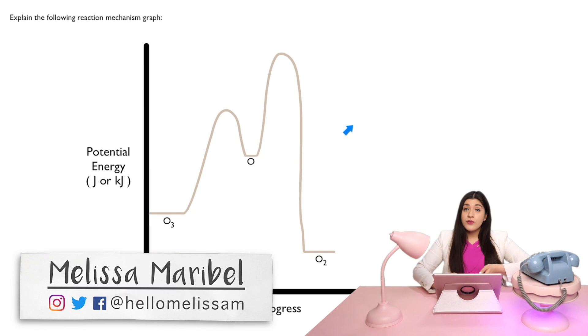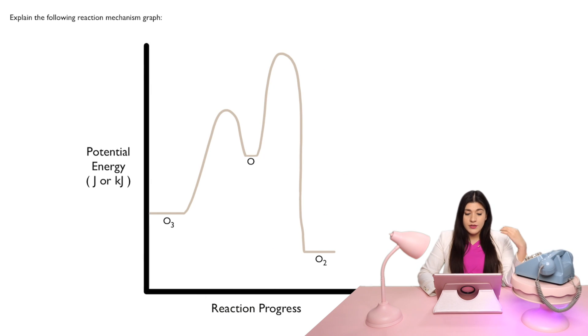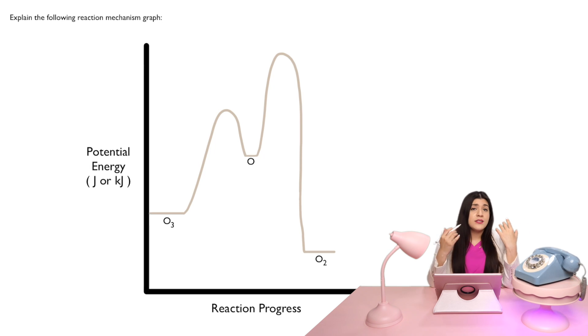So let's say if you had this sort of graph and we wanted to understand what every single part of this graph is talking about. We are going to label this and what this is describing is an actual reaction that's occurring with its reactants, how that's becoming our products.